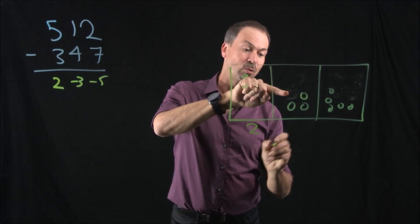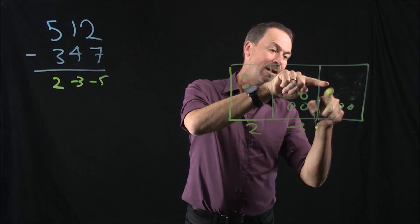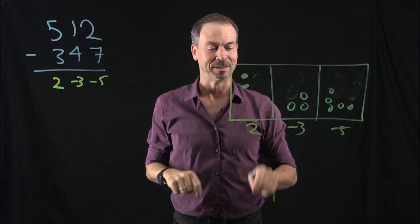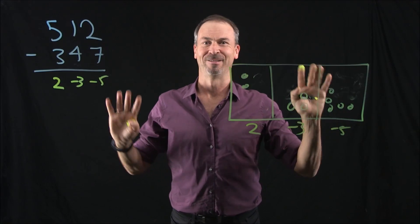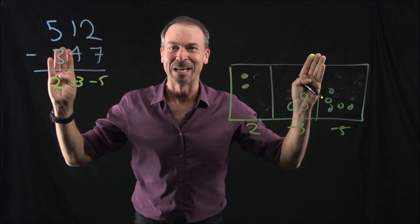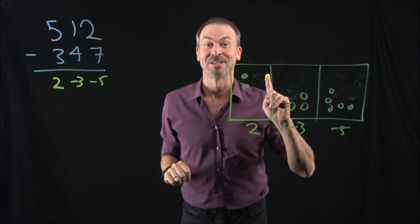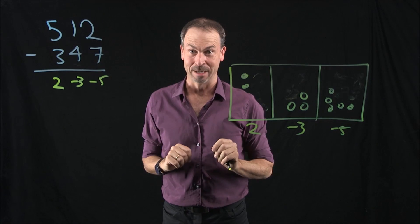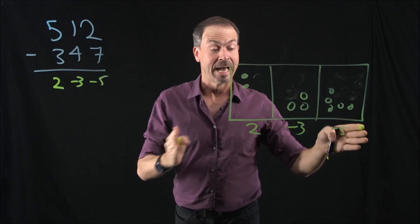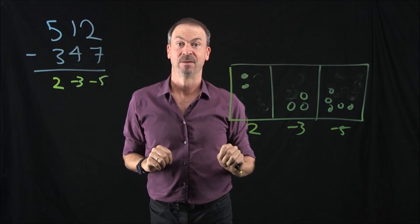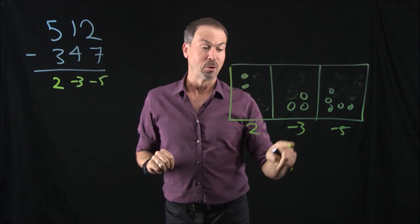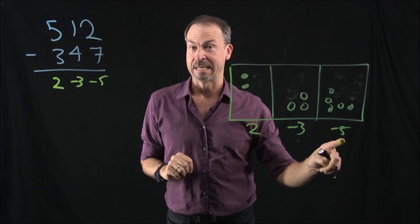And what are we left with? 2 hundreds. Yep, 2 dots, 3 anti-dots, 3 anti-10s, 5 anti-dots, 5 anti-1s. 200 negative 3t negative 5. Absolutely correct. Nothing wrong with that answer. It's a fine, fine answer mathematically. It's just society, again, thinks this is weird. So the real challenge now is how can I fix up this weird answer for society's sake? Because most people don't like to say negative 3t, they don't like to say negative 5.